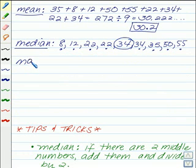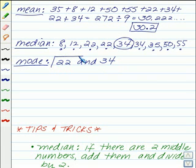And finally, we need the mode. The mode is the most frequent number. Looking at our list, I see we have two 22s. We also have two 34s. Therefore, in this case, we have two modes, 22 and 34, because they're both listed twice and more than the rest of the data.